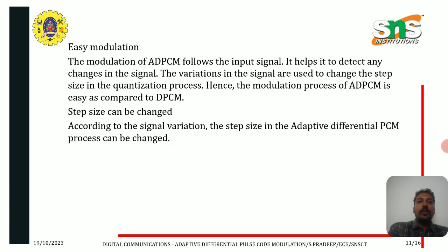The modulation of ADPCM follows the input signal, which helps it to detect any changes in the signal. The variations in the signal are used to change the step size in the quantization process. Hence, the modulation process of ADPCM is easier compared to DPCM, as the step size can be changed according to the signal variation.